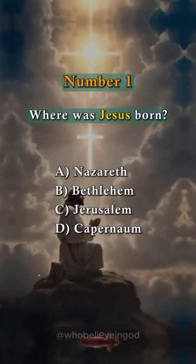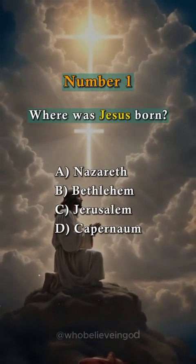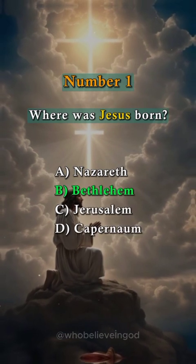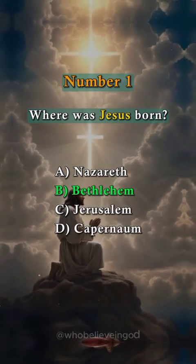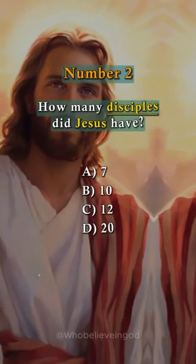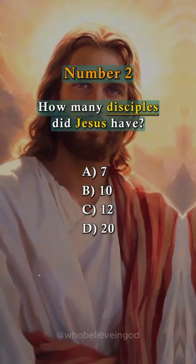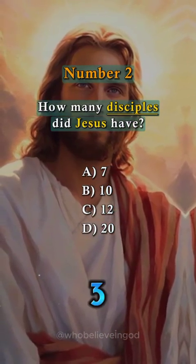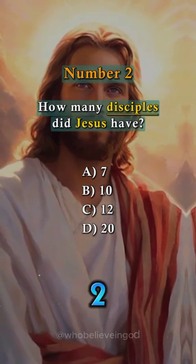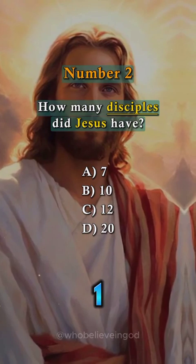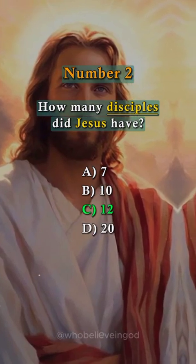Number one: where was Jesus born? Answer: Bethlehem. Number two: how many disciples did Jesus have? Answer: 12.